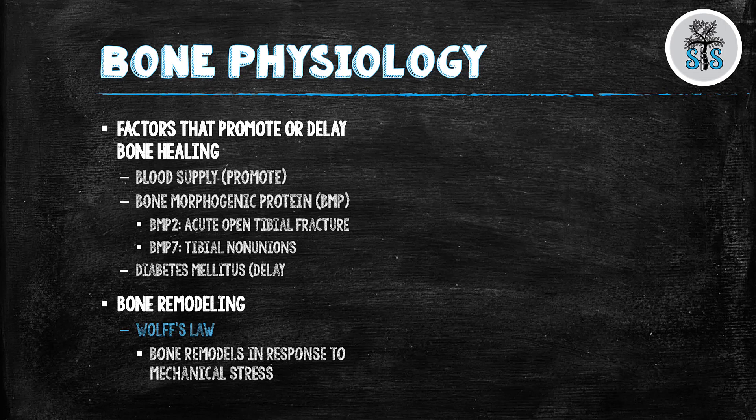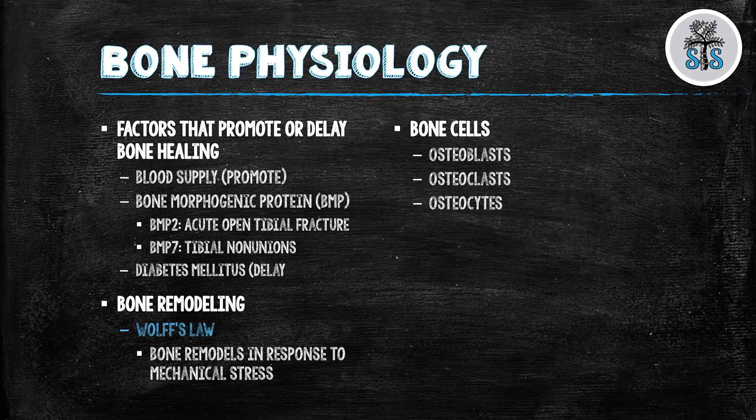Now bone remodeling — you may remember Wolff's Law, which is actually very important along with piezoelectric activity. With Wolff's Law, bone remodels in response to mechanical stress: with relative stability, the more stress and strain across the fracture site, the more the body is actually healing. Lastly, the bone cells: osteoblasts are derived from undifferentiated mesenchymal cells and form bone by producing a non-mineralized matrix; beta-catenin plays a major role in inducing cells to form osteoblasts. Osteoclasts come from the macrophage lineage and are what resorb bone. Osteocytes were former osteoblasts that remain and maintain bone and cellular matrix, and are important in regulation of calcium and phosphate.